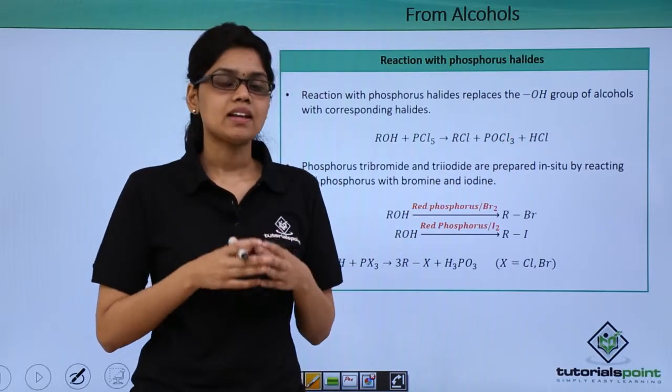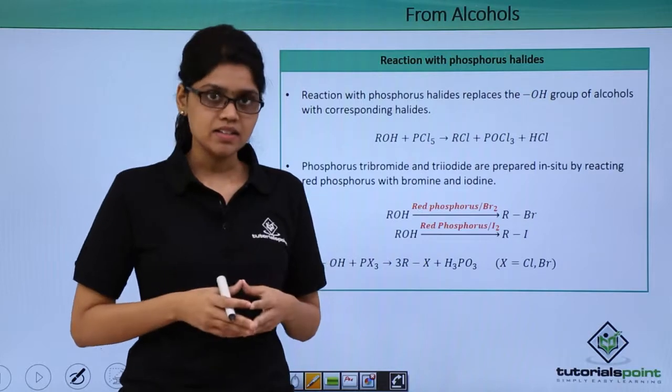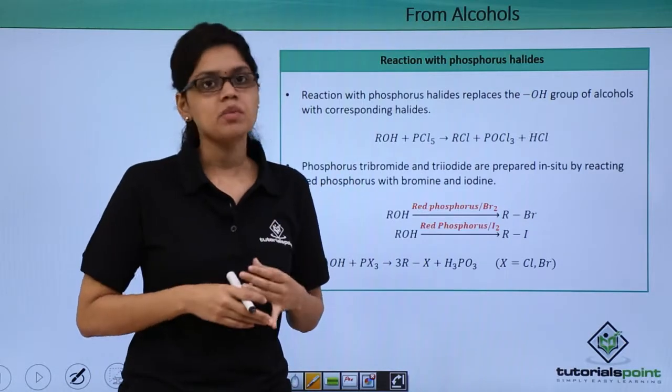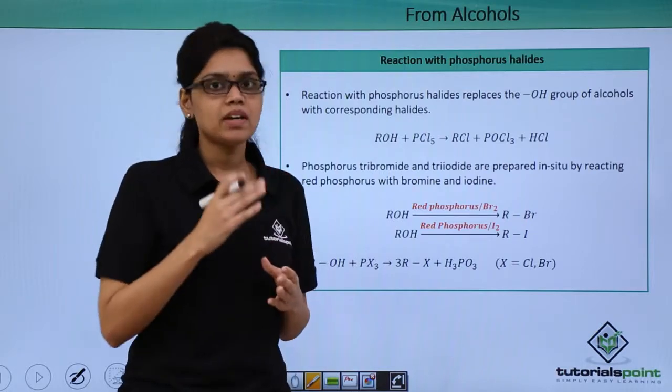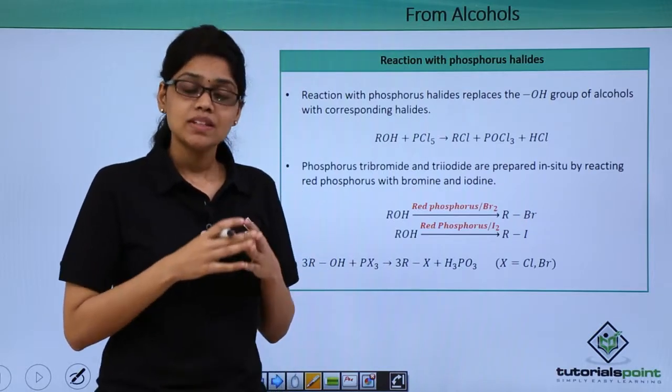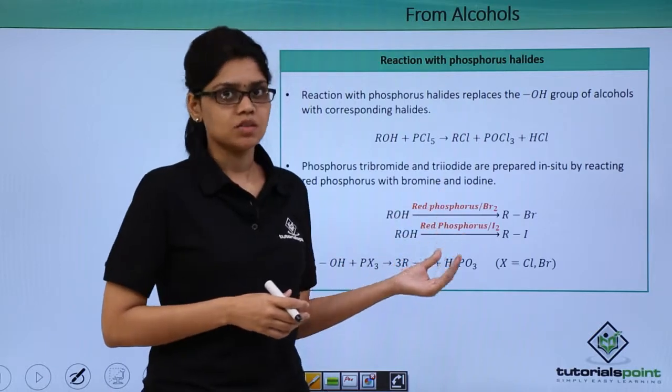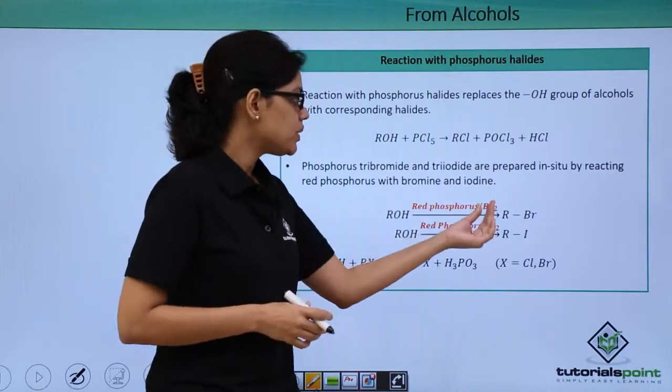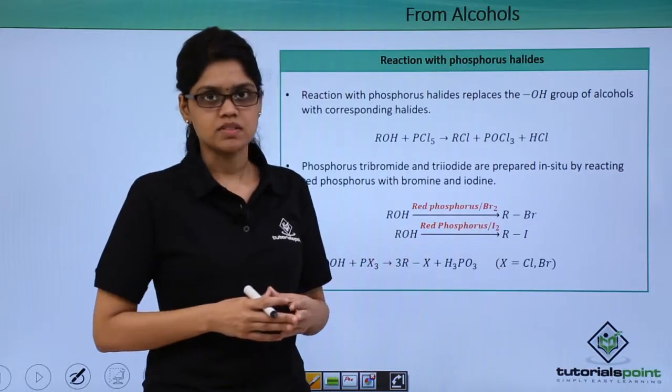Similarly, in order to obtain alkyl bromides and alkyl iodides, what we do is we react alcohol with phosphorous tribromide and phosphorous triiodide, that is PBr3 and PI3. These reagents are prepared in situ or during the chemical reaction by reacting bromine with red phosphorous and iodine with red phosphorous.